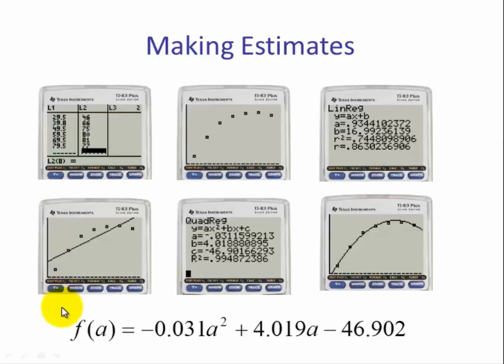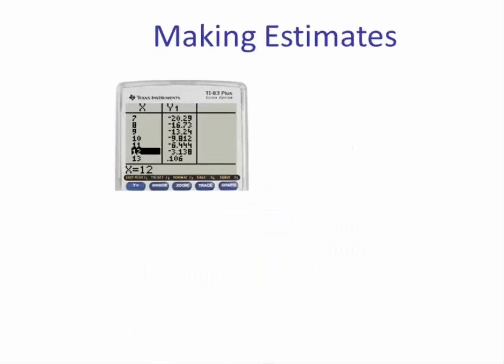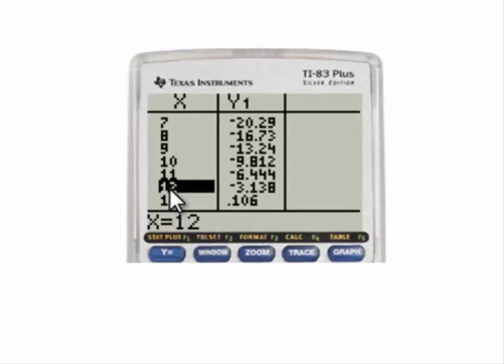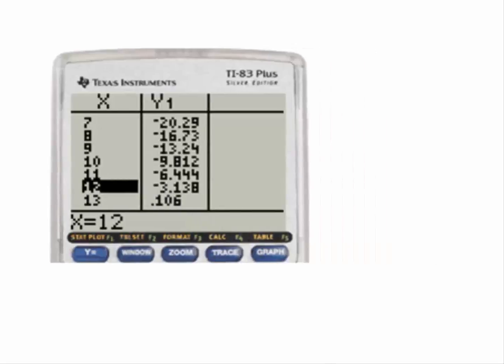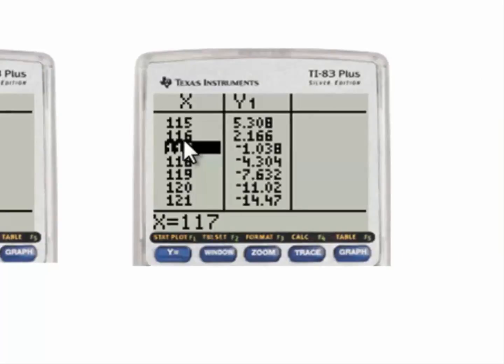To find the a-intercepts algebraically, we would set f of a equal to 0 and use the quadratic formula to solve for a. I'm going to approximate the a-intercepts using the table of values. Using a table of values, we see that somewhere between year 12 and 13, we have a value of 0, and between the ages of 116 and 117, we have a value of y of 0. This is likely a model breakdown because the normal 12-year-old doesn't own a home and most people don't live to be 116 years of age.